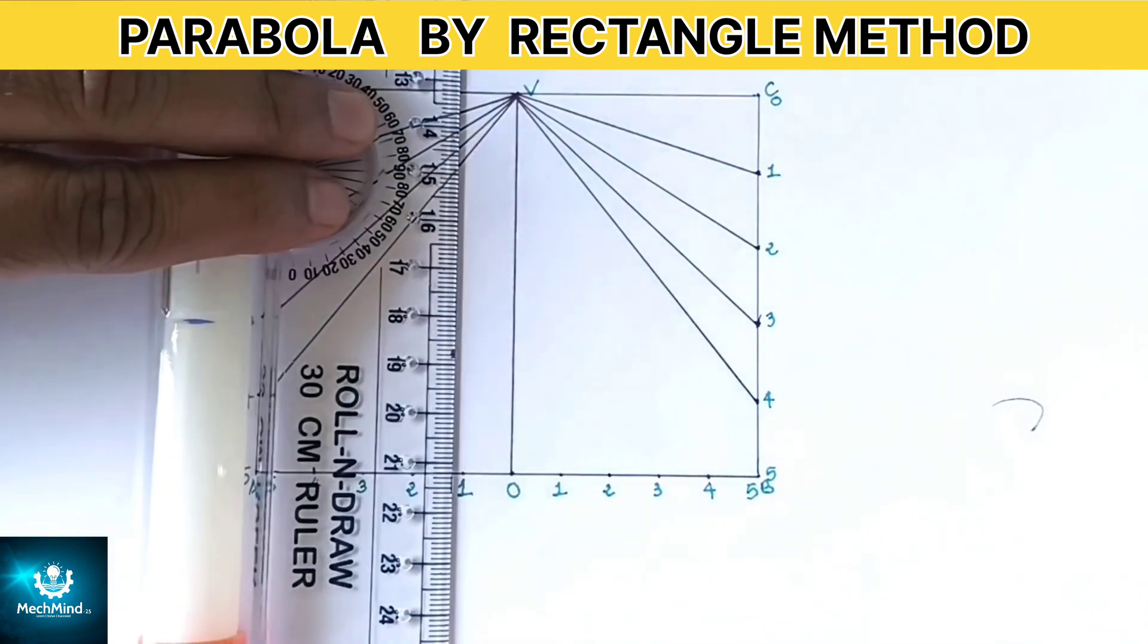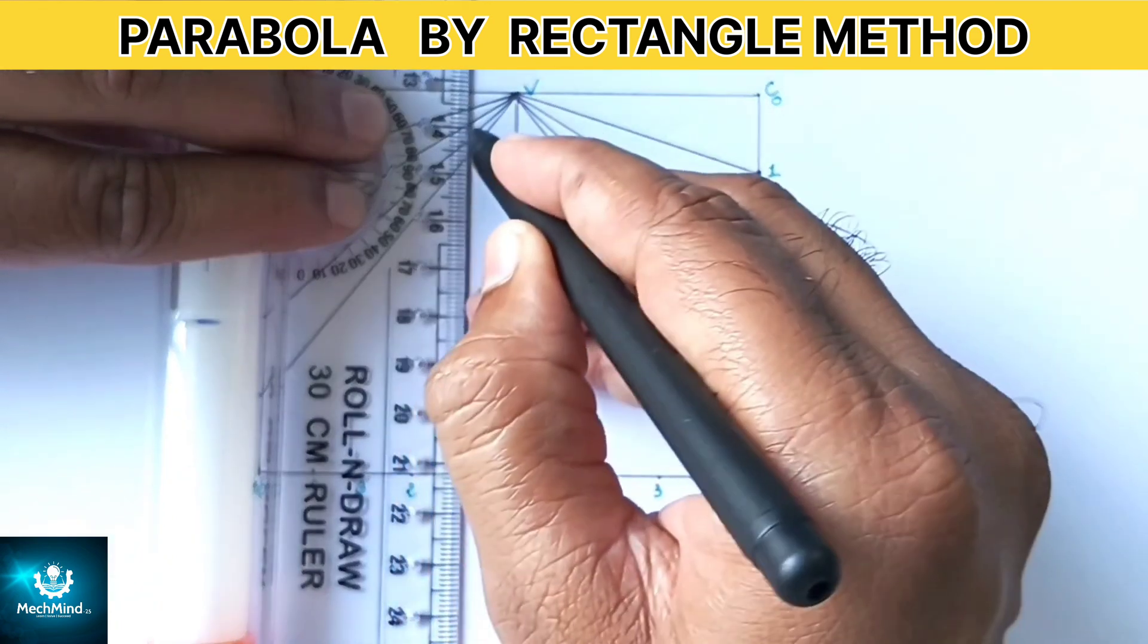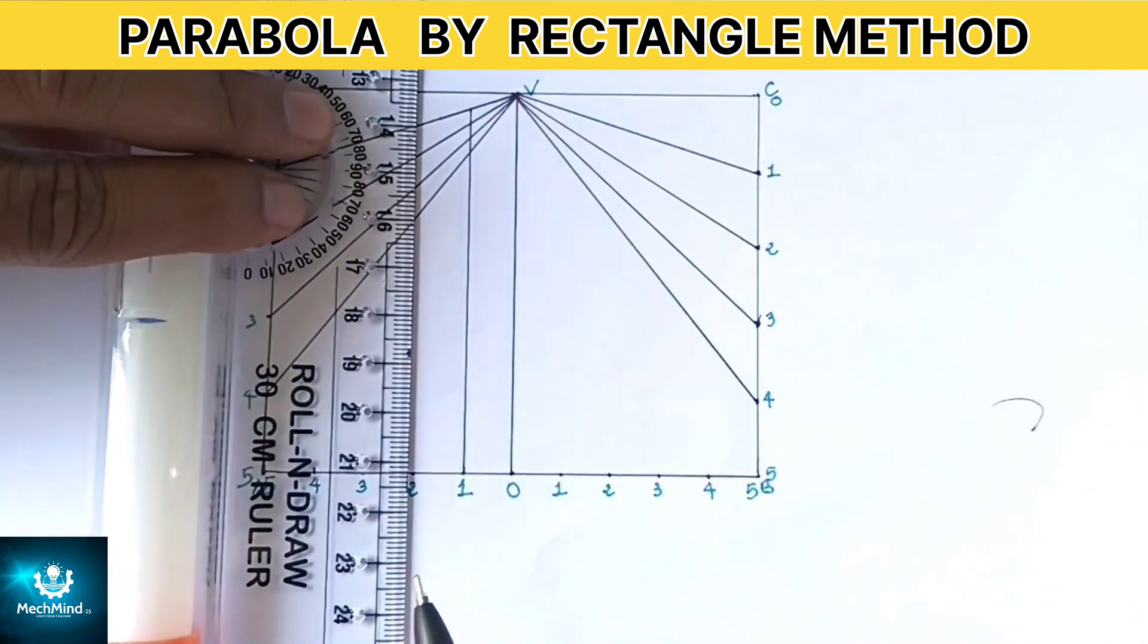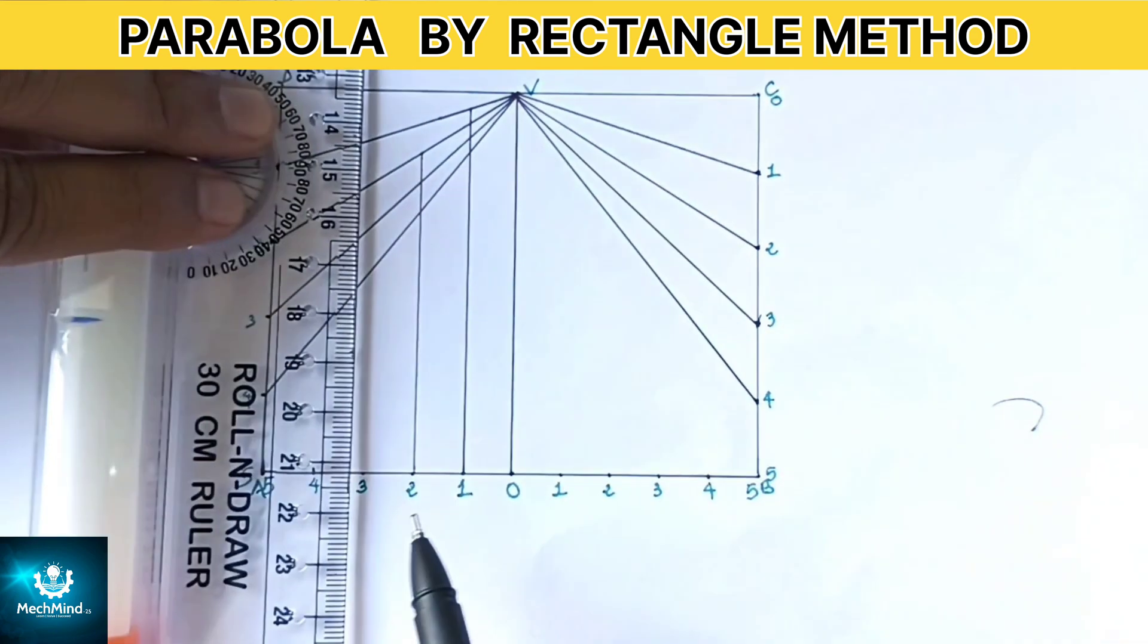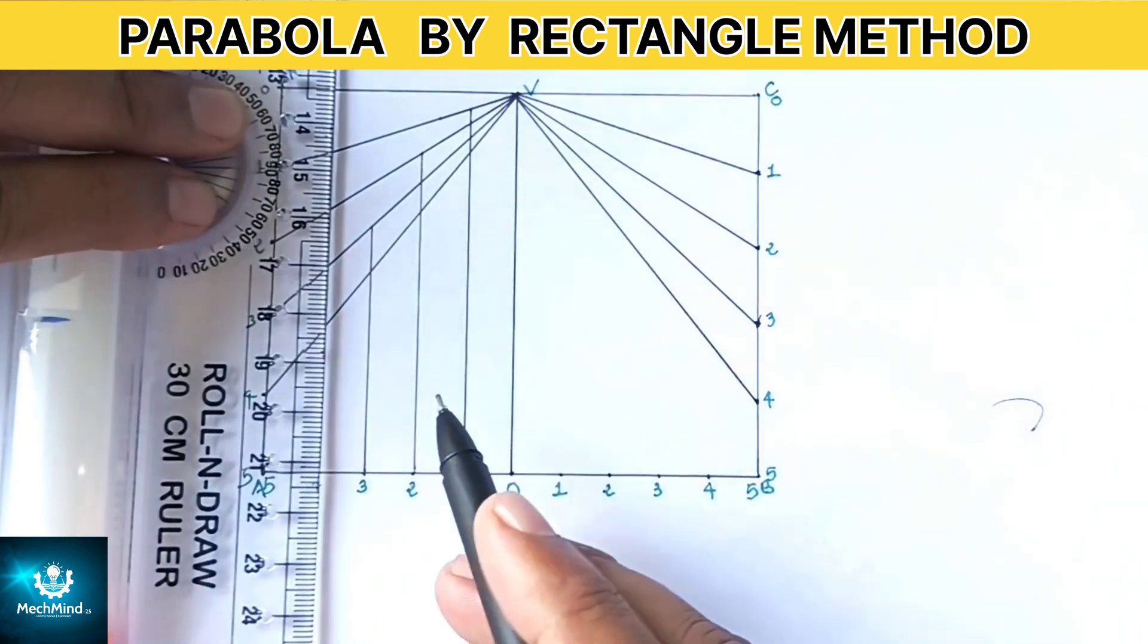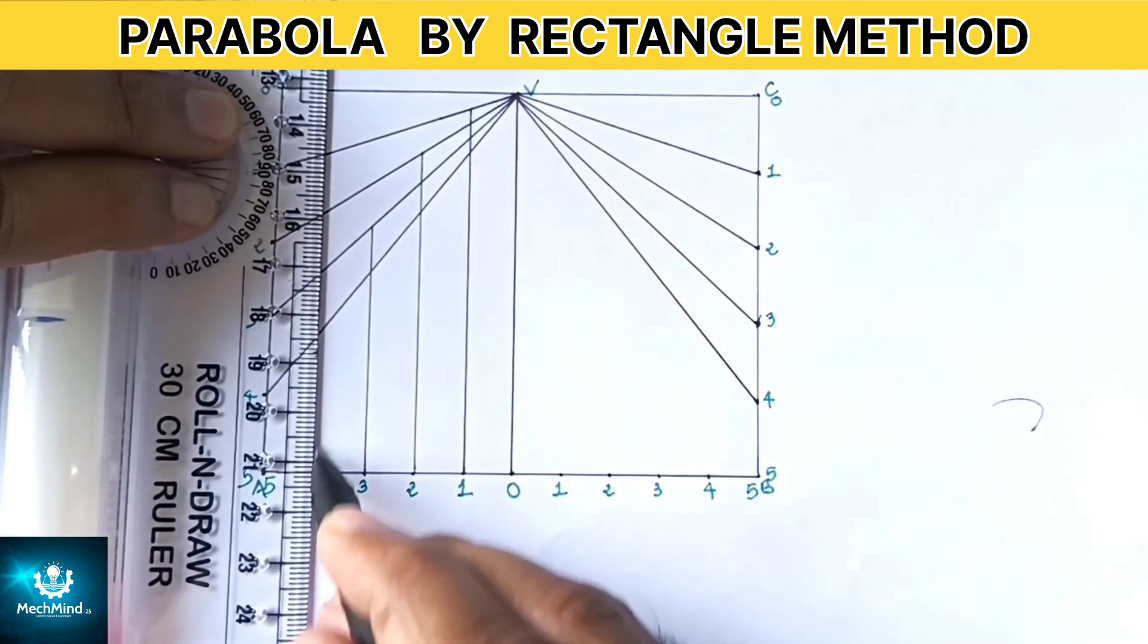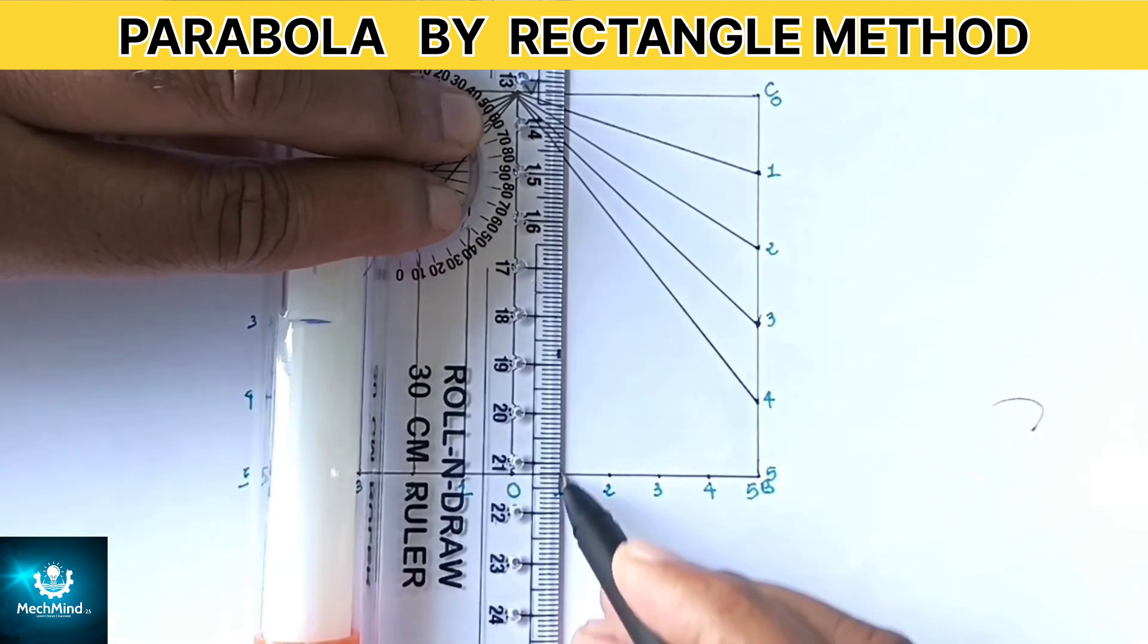Next, using ruler scale draw a vertical line upward from each division points from the base length 1, 2, 3 and 4 parallel to the axis length OV until it intersects the slanting line drawn from the vertex point V to 1, V to 2, V to 3 and V to 4.